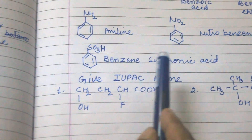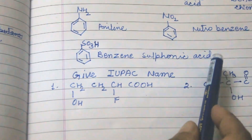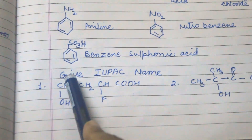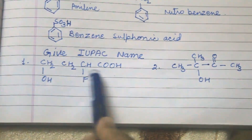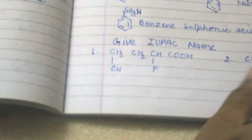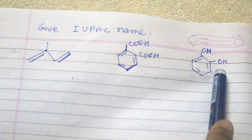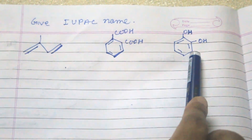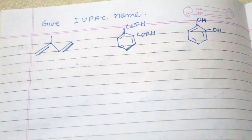When SO3H is attached to benzene it is known as benzenesulfonic acid. Now my question is: just give the IUPAC name of these compounds. Thank you.